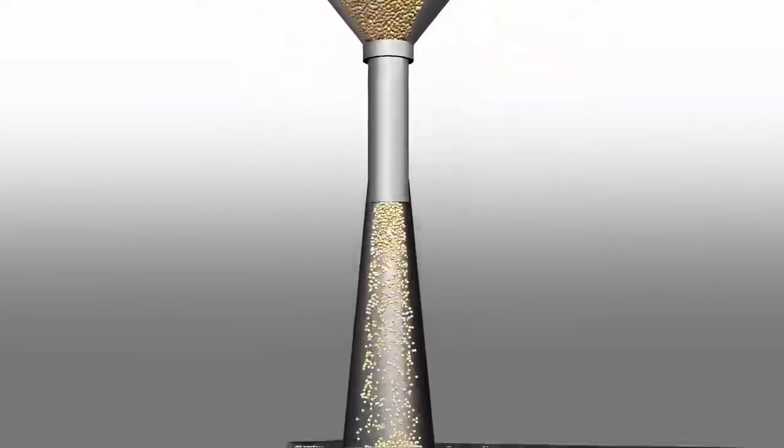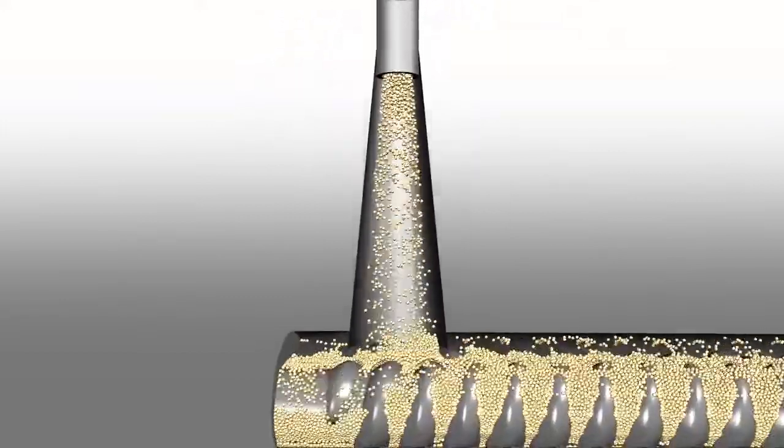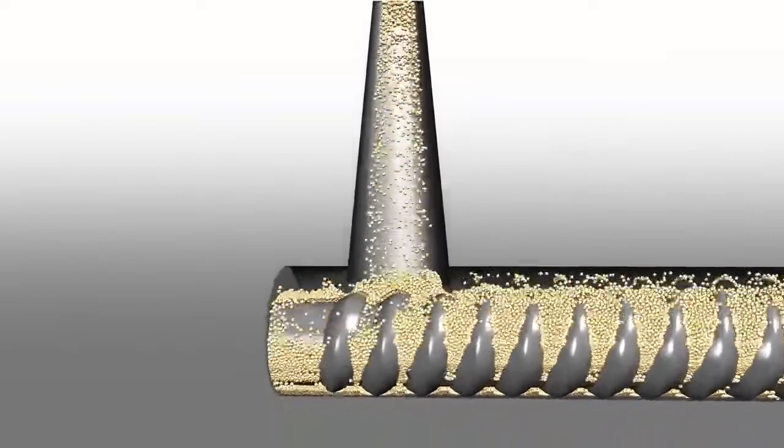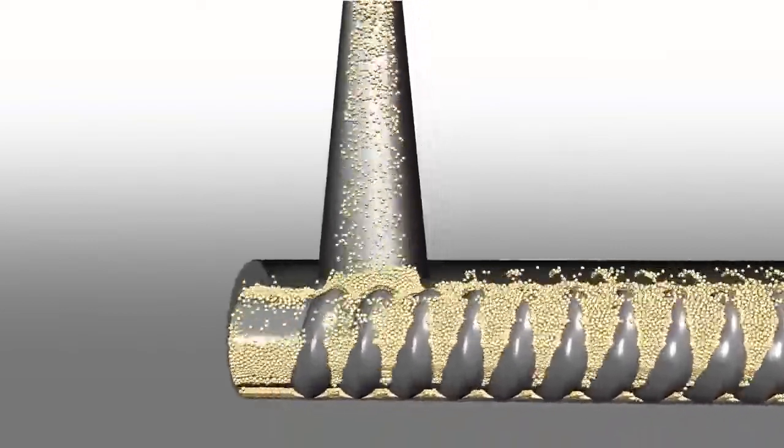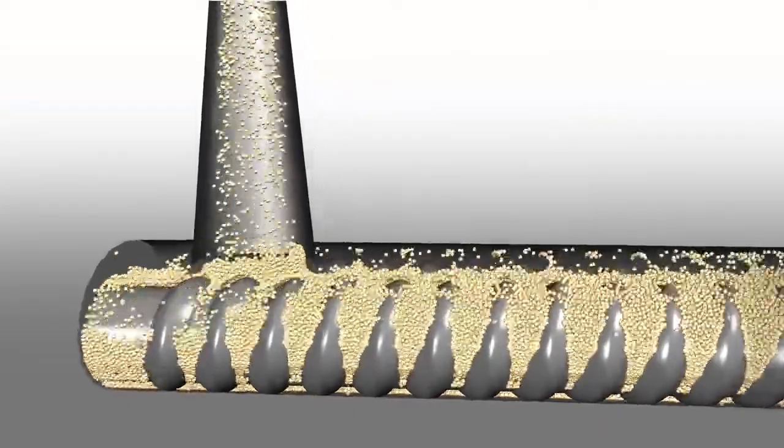As the compound is fed through the extruder barrel, the temperature of the material increases until it reaches 390 degrees. Here, the powdered compound melts into a viscous material.